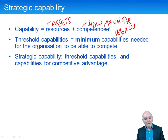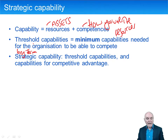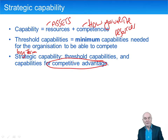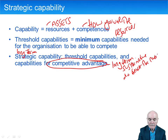What we really want however is strategic capability, and as soon as you see the words strategic or strategy, you want to be thinking long term. Strategic capability means we're going to be having a long-term capability, and this is going to give us what's called competitive advantage. Competitive advantage really means long-term, sustainable — where you do better than the rivals.